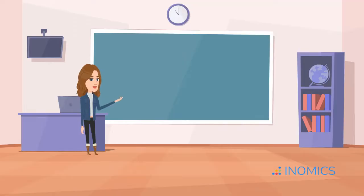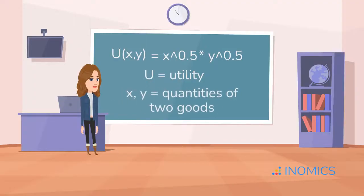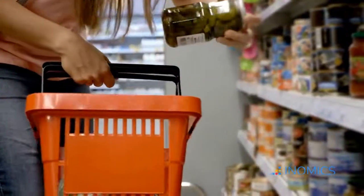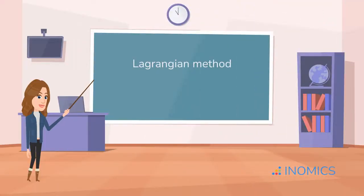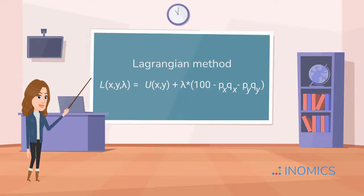In models, we often represent utility with a utility function, where U is utility and X and Y are quantities of two goods. To find the optimal consumption bundle, we usually solve a constrained optimization problem using the Lagrangian method. We set up this Lagrangian function L, equal to Alex's utility function U, plus lambda times Alex's budget constraint. The budget constraint is $100 — Alex's budget minus the prices times the quantities of goods X and Y that Alex could buy. Take partial derivatives, solve the first-order conditions, and you've got the utility-maximizing quantities for X and Y.